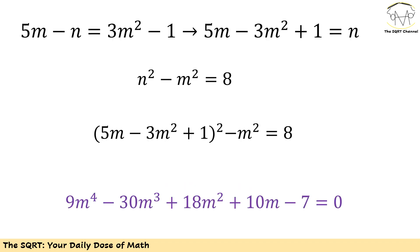Let's go back to what we found: 5m minus n equals 3m squared minus 1. I'm going to rearrange to find n based on m. It's easy to see that n can be written as 5m minus 3m squared plus 1.